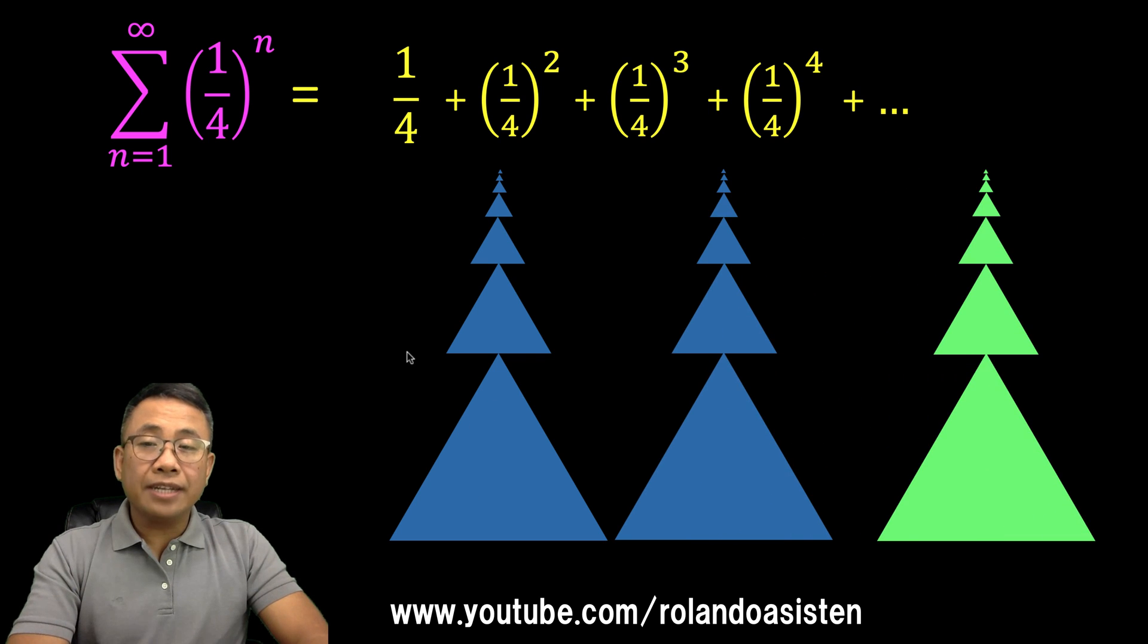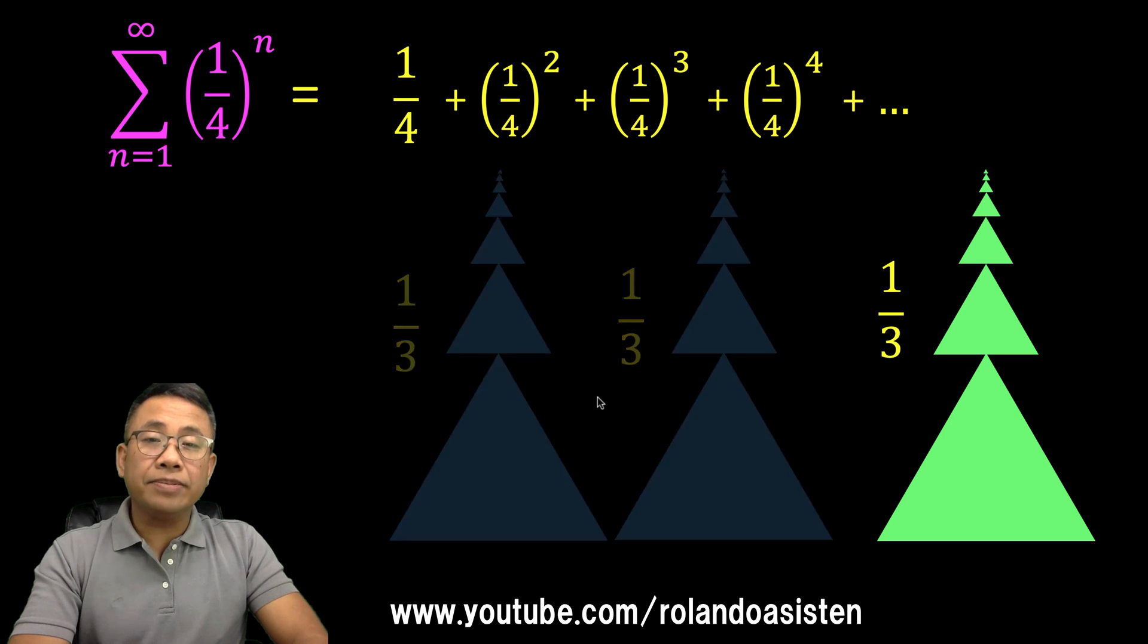The first column of blue triangles represent 1/3 of this infinite geometric series. So we do not need these blue triangles. Let's remove them.